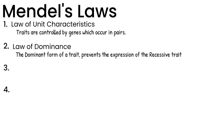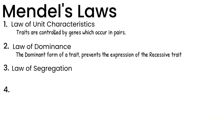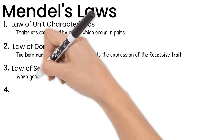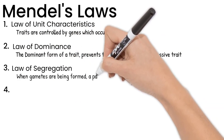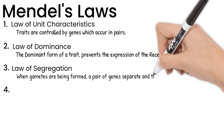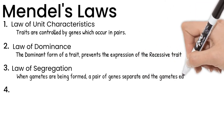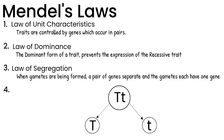The third law is the law of segregation. When gametes are being formed, a pair of genes separates, and the gametes each have one gene. See the video about meiosis for a review if you need to.